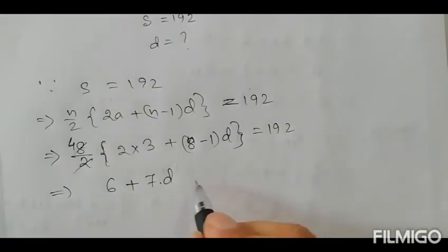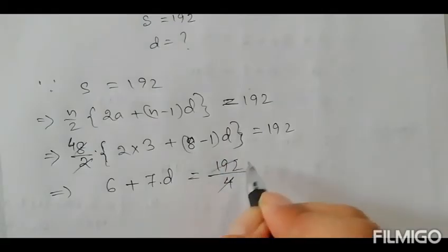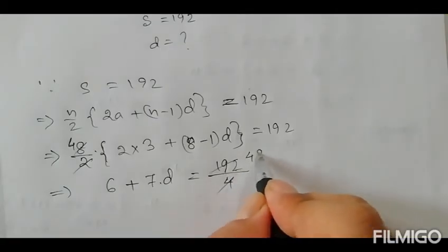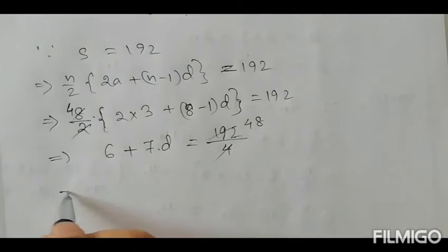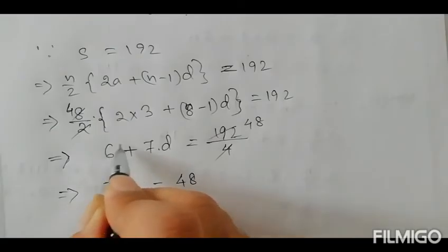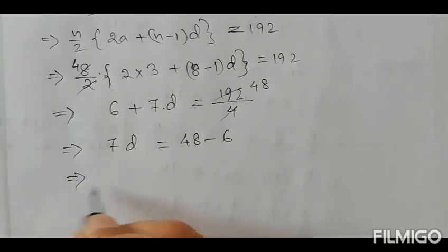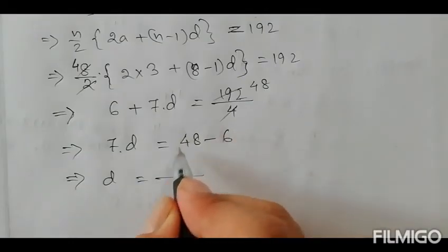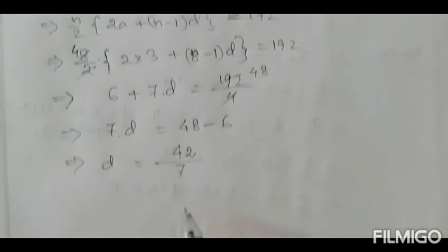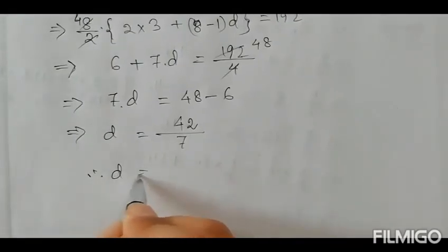Substituting values, 192 equals 9 by 2 times 2a plus 8d. Simplifying, we get a plus 28 equals 144 by 9. Working through the calculation, d equals 4.